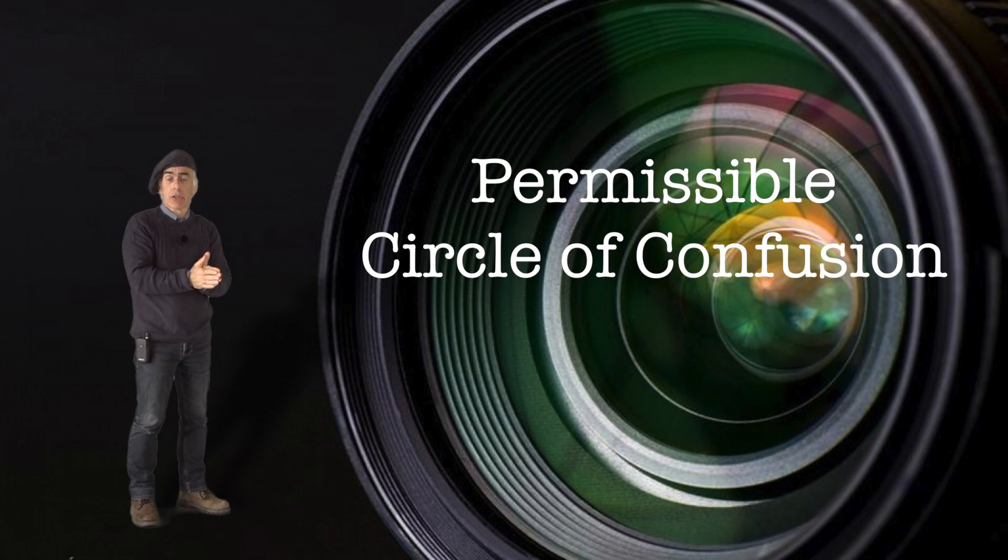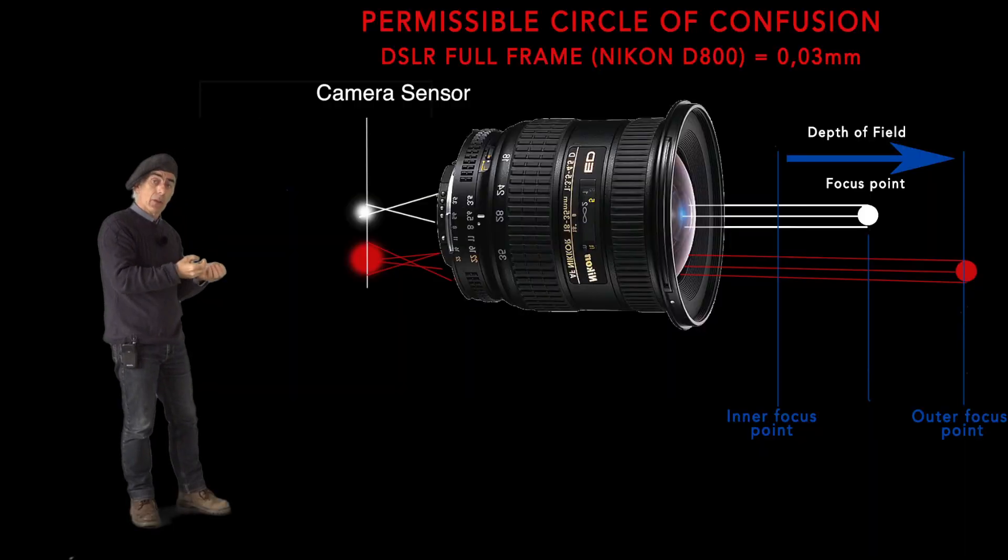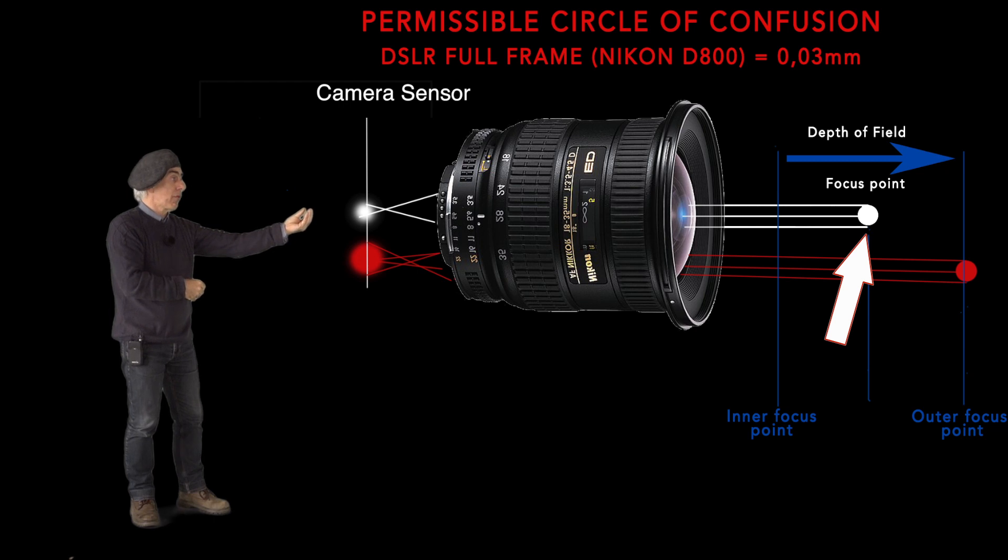The next step is that we could talk about the permissible circle of confusion. What is the permissible circle of confusion? Well, now we need to go back to two objects: one object right here which we have focused on, and a second object which is a bit further away where we did not focus on.